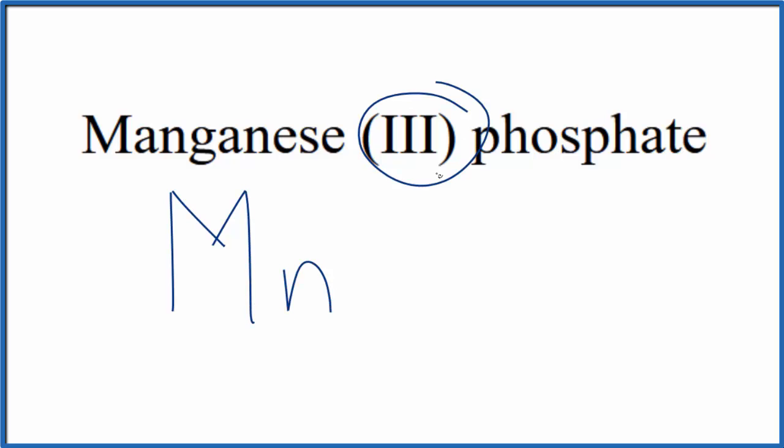And that Roman numeral III here in parentheses means it's going to be 3+. Next we'll write the formula for the phosphate ion.